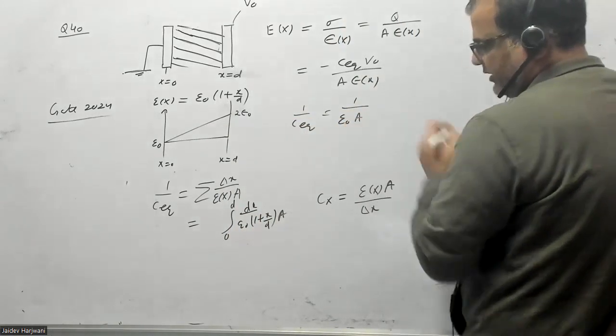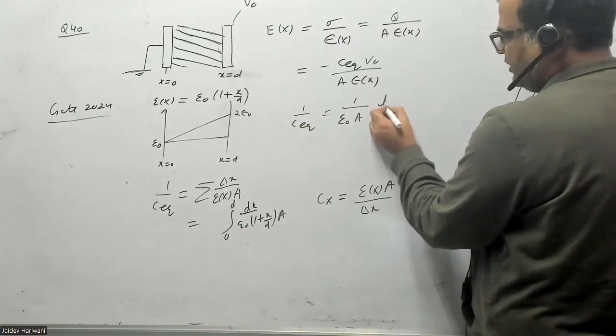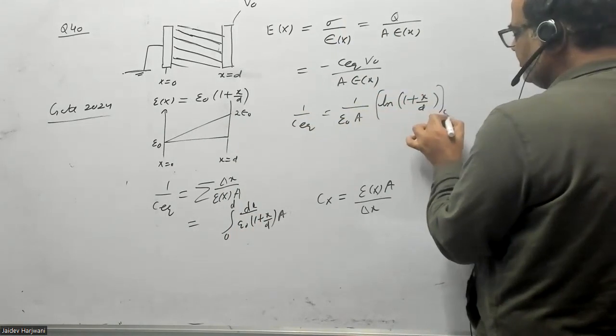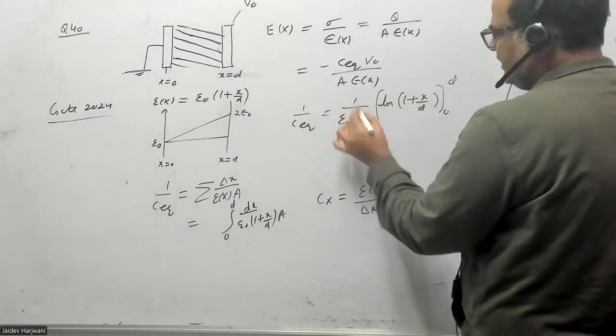This C equivalent, 1 by C equivalent will be 1 upon ε naught A. If I integrate this one, this will give me ln(1 plus X by D). The limit goes from 0 to D. If I differentiate this one, this will be 1 by D and D will come here.